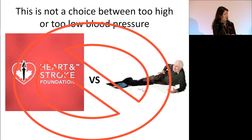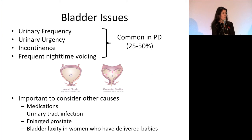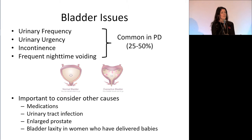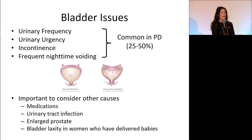Bladder issues in Parkinson's include frequency, urgency, incontinence, and frequent nighttime voiding, affecting about 25 to 50 percent of people. This is due to an irritable bladder — an autonomic symptom where even a small amount of urine triggers the urge to contract. However, bladder symptoms can be caused by many things, so it's important to rule out medications, urinary tract infections, enlarged prostate in men, and changes from childbirth in women.